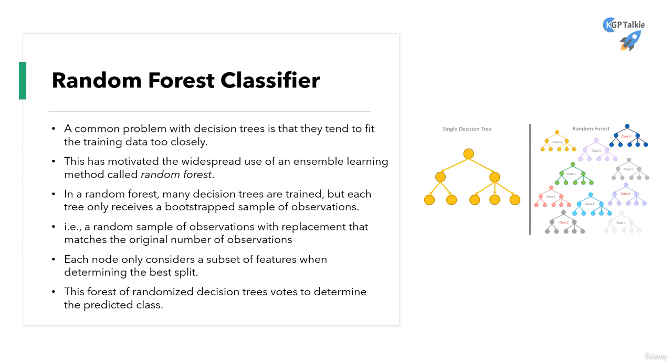A common problem with decision trees is that they tend to fit the training data too closely and there is very high chance that it might get overfitted very soon.